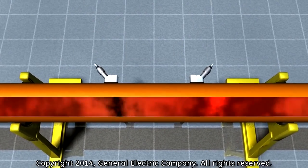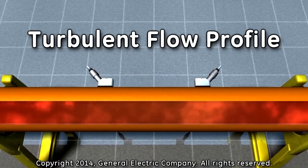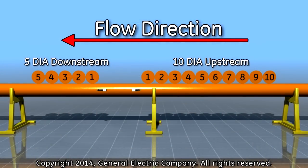In order to ensure the best accuracy for flow measurement, you must have a turbulent flow profile. You can achieve this by having at least 10 diameters upstream and 5 diameters downstream of straight run for the transducer locations.